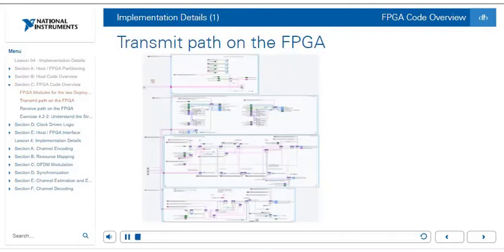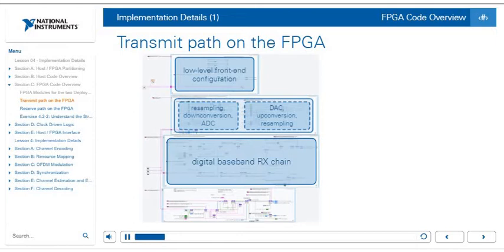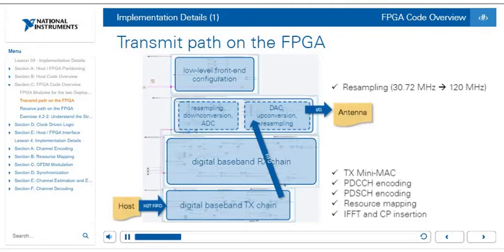Let's look at what the transmit path looks like on the FPGA VI in the downlink. The FPGA VI is divided into four different loops — the blue squares — each called a clock domain because each runs at a different clock rate on the FPGA. The top loop handles low-level front-end configuration. The second loop contains the resampling, digital down conversion, ADC, DAC, up conversion, and resampling. The third loop is the digital baseband receiver chain, and the fourth loop is the digital baseband transmitter chain.